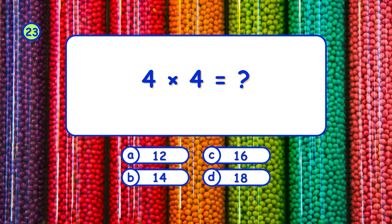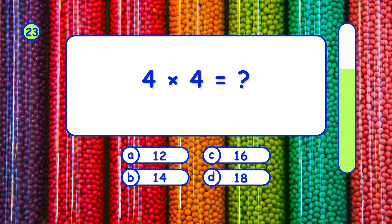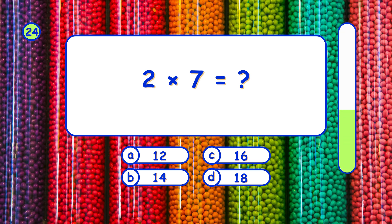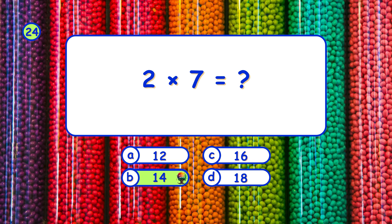What is 4 times 4? It's C, 16. What is 2 times 7? It's B, 14.